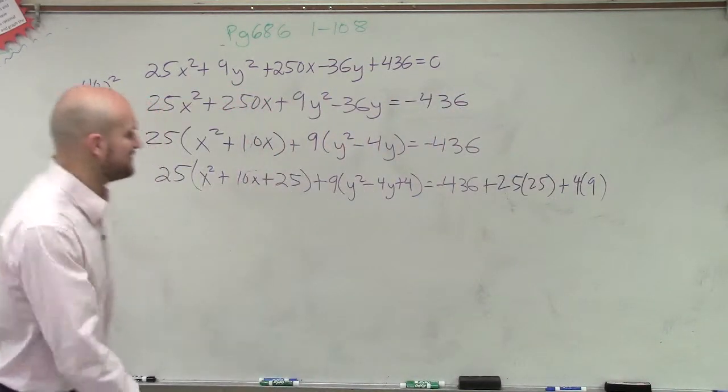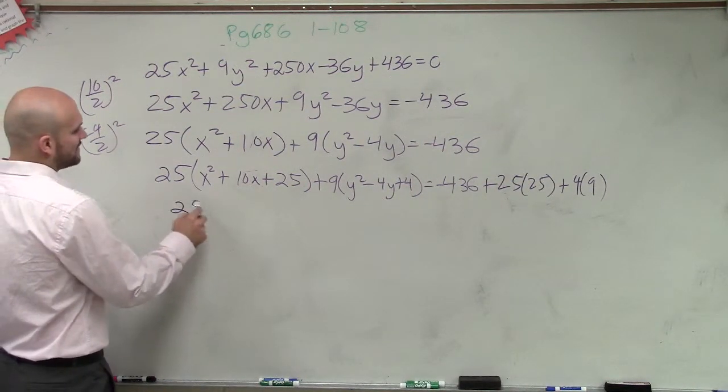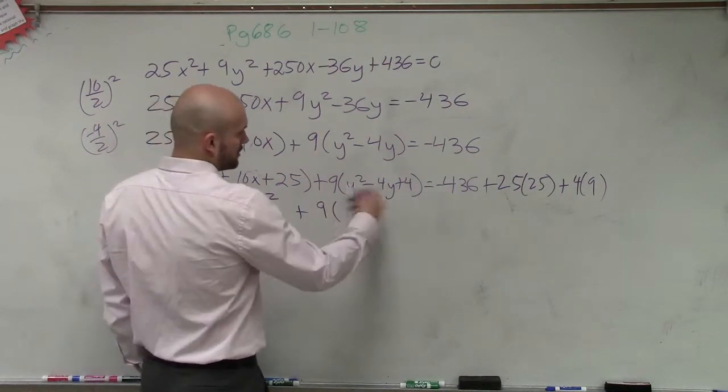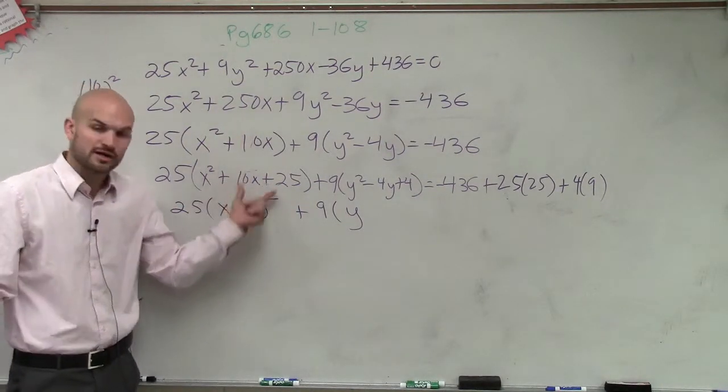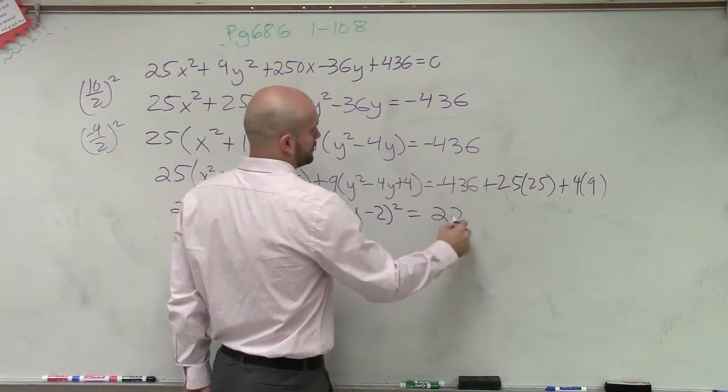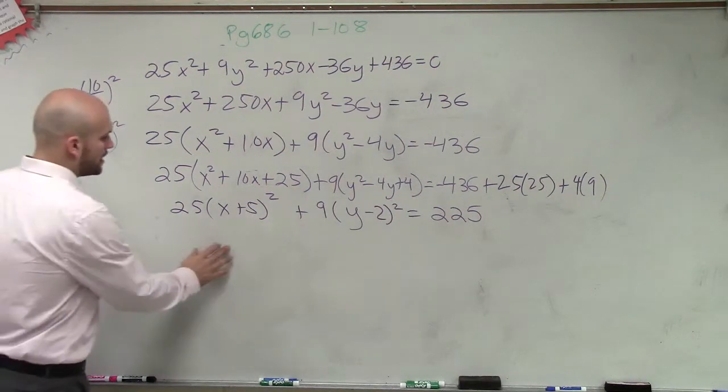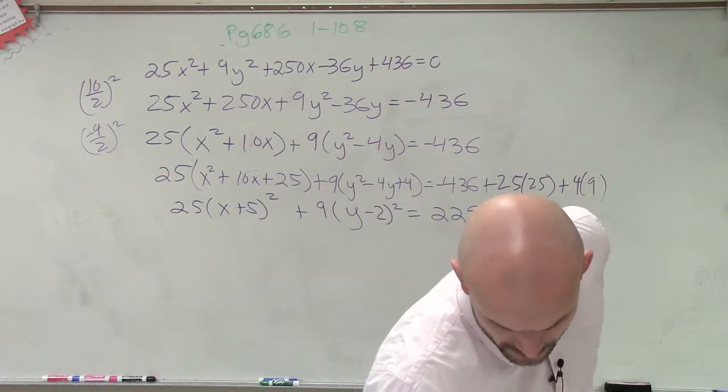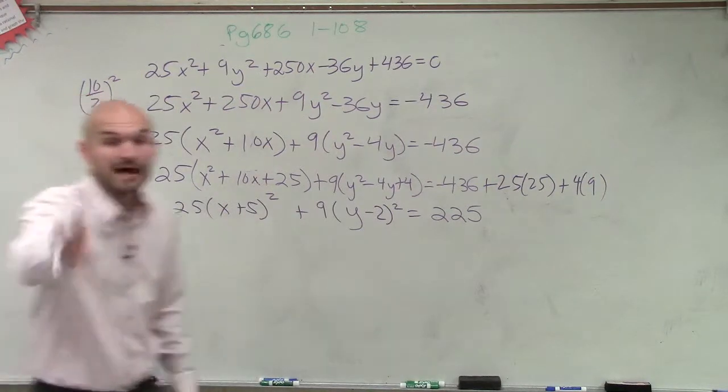So we get 25 times x plus 5 squared plus 9 times y minus, because now I'm factoring these to their perfect square trinomial. Perfect square trinomial factors to a binomial squared. This is y minus 2 squared equals 225. And that actually is the problem. They're asking to figure that out and graph. We're going to graph. And still, so now they go and complete it, right?